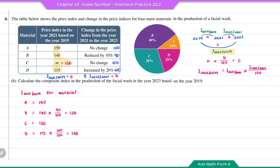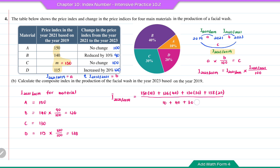Now calculating the composite index: 150 times 10 plus 126 times 40 plus 130 times 30 plus 138 times 20, divided by the total weightage 10 plus 40 plus 30 plus 20. The answer is 13200 over 100, so the composite index equals 132.